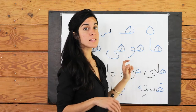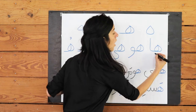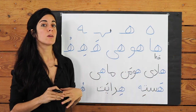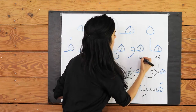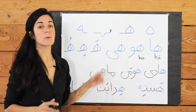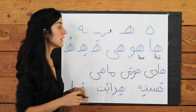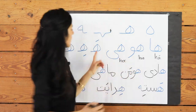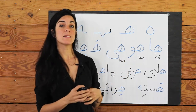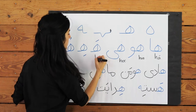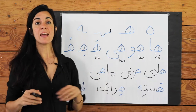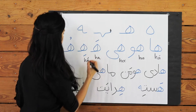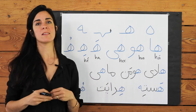H with an A sound: ha. H with a U sound: hu. H with an A sound: ha. H with an A accent: ha. H with an A accent: ha. H with an O accent: ho.